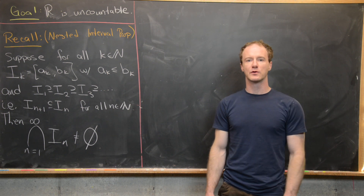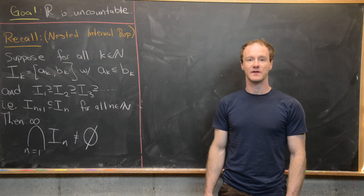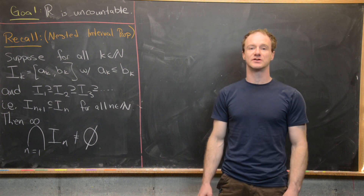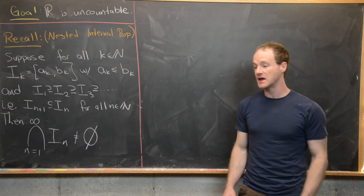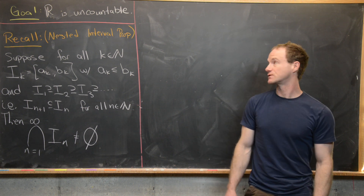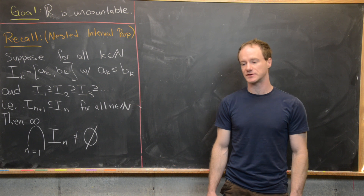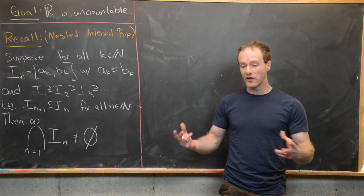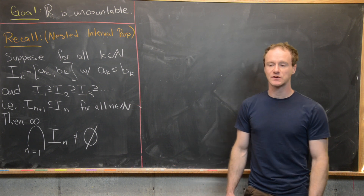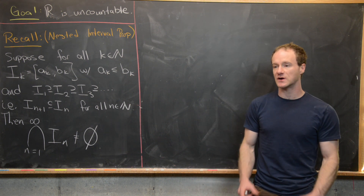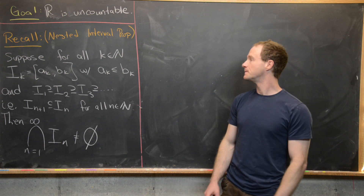We're following up with our proof from the last video where we proved that the rational numbers form a countable set. In this case, we're going to prove that the real numbers form an uncountable set. In other words, there is no one-to-one and onto function from the natural numbers into the real numbers.